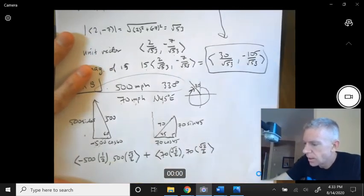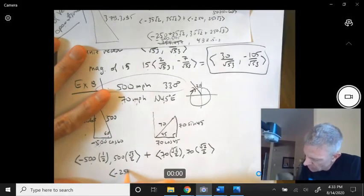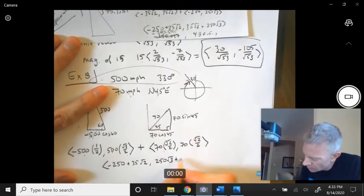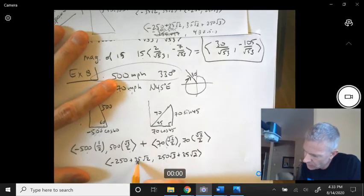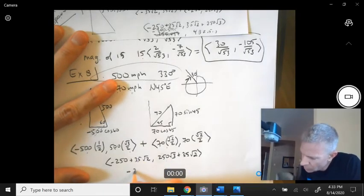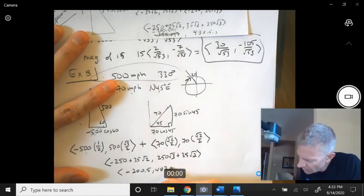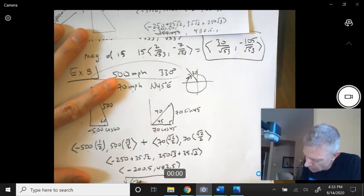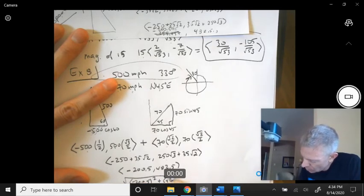Adding these together and simplifying, that's going to be -250 plus 35√2. This is going to be 250√3 plus 35√2. And then if you put that in your calculator, you get something like -200.5 and 482.5. And if you get the magnitude of that, square root of -200.5 squared, I would keep the entire number in the calculator for more accuracy. 482.5 squared.